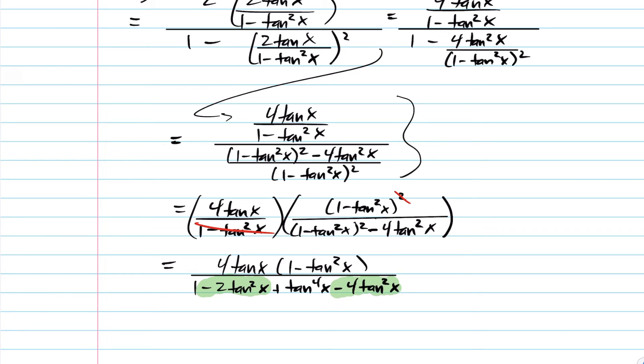I'm also going to distribute the top here, giving us 4 tan of x minus 4 tan cubed of x, all divided by 1 minus 6 tan squared of x plus tan to the power of 4x.